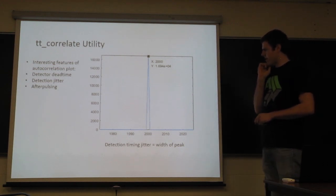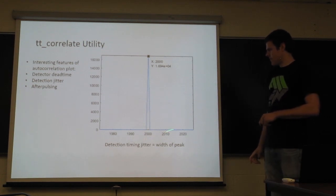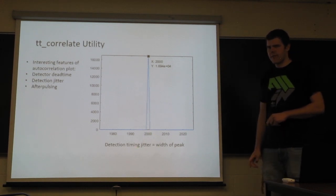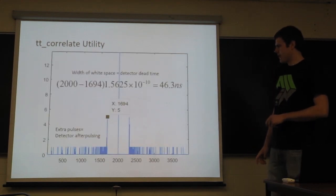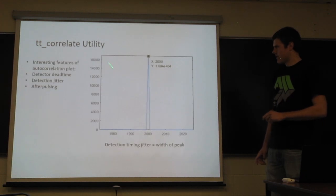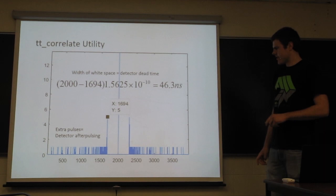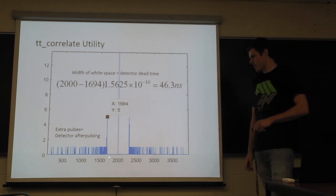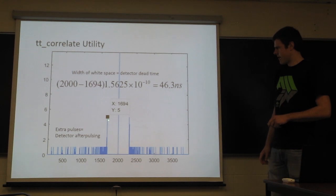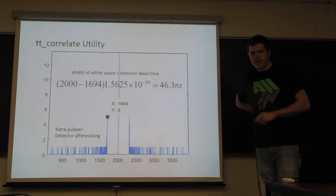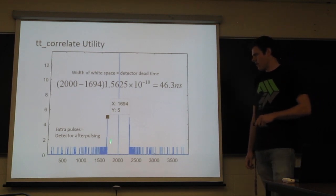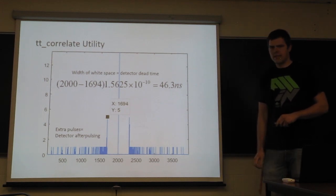So in this case, if we look at the output of the correlation of the detector with itself, where the bottom is units of time bins, then we can see that the width here is related to the detector timing jitter. Similarly, if we zoom in on the bottom, where this was units of thousands, now we're zoomed in considerably, we can see there is this break where there was no events at all. Now, this corresponds to the dead time of the detector, and here we can calculate from 1694 to 2000 time bins, we have 46 nanoseconds, which is the dead time of a silicon APD. And then if you add up all these other pulses that happen afterwards, that gives you the detector's after pulsing.